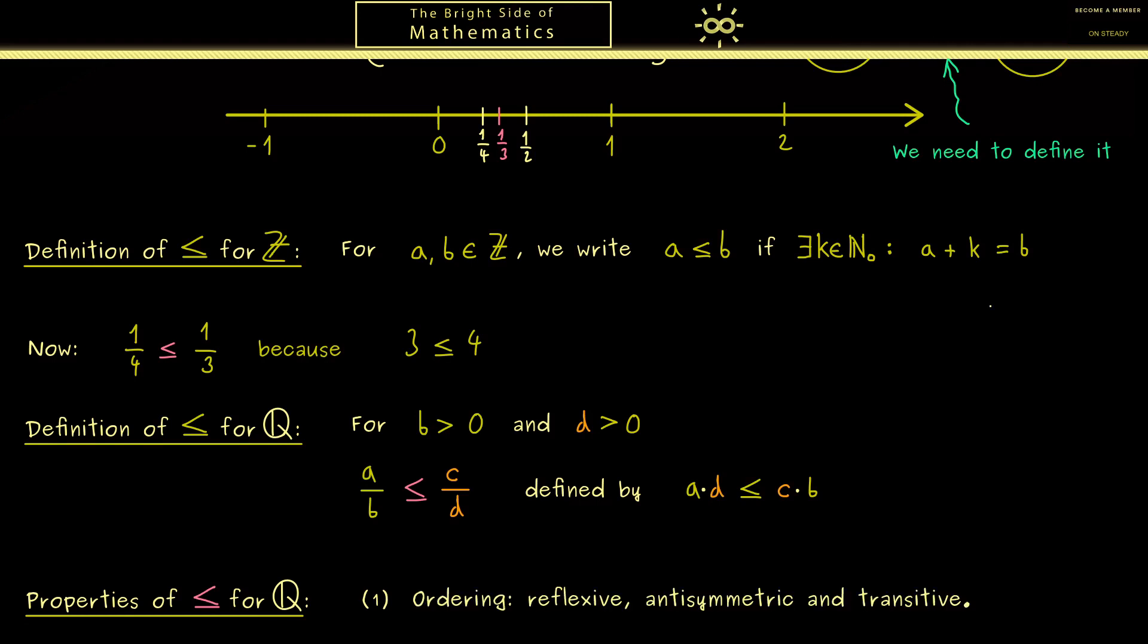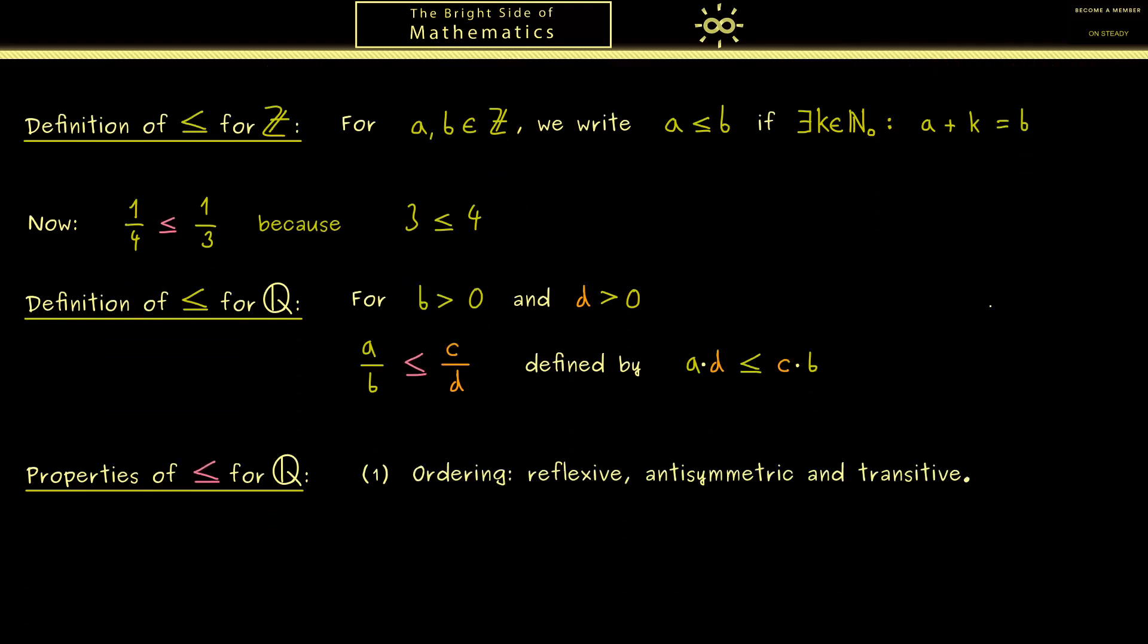And the second property tells us that the ordering respects the addition. More concretely, if we have x is less or equal than y, we can just add a new rational number on both sides, and this does not change the ordering. So this is a nice property we have for all rational numbers x, y, and z.